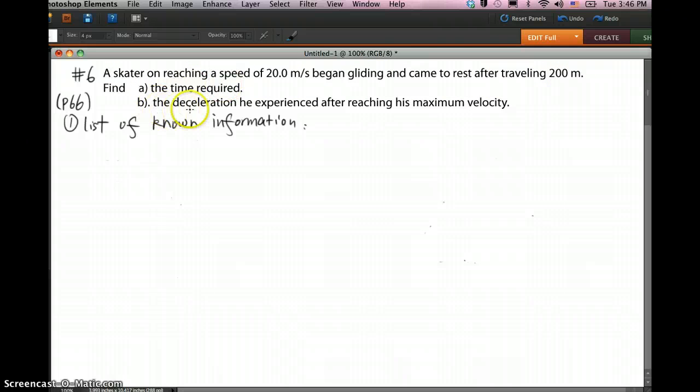Find the time required and the deceleration experienced after reaching maximum velocity. First of all, you need to make a list of known information. Obviously it's going to take some time for the skater to reach the speed of 20 meters per second, but that's not our interest. Our interest starts from when the skater established the velocity and began gliding, meaning slowing down, and finally came to rest.